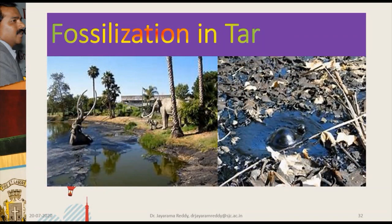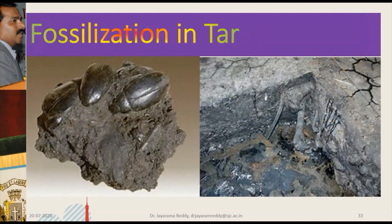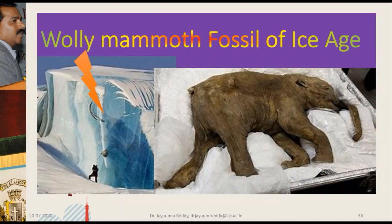On the left-hand side is a replica created in a museum showing how fossils are preserved in tar, and on the right-hand side you can see the tar in which fossils are normally preserved. On the left-hand side there is a woolly mammoth stuck in the ice, and on the right-hand side you can see the actual woolly mammoth preserved in ice, excavated and kept in the museum.